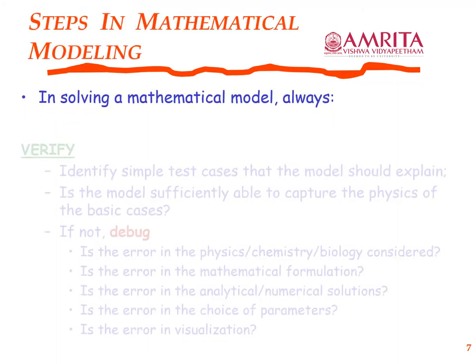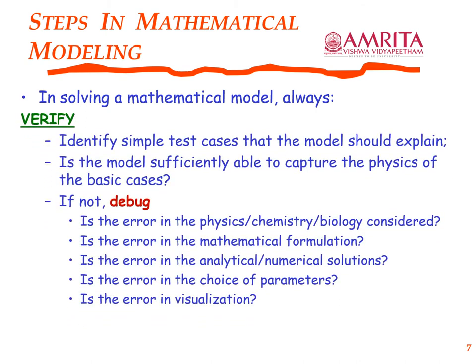When solving a mathematical model, always verify: is the model sufficiently able to capture the physics of simple test cases? For example, with residence time distribution in a CSTR, the simple case is an ideal reactor. If I collapse my RTD to the mean RTD, do I recover the ideal CSTR equations? If not, there is a bug somewhere. It could be in the identified physics, in the mathematical formulation, in the analytical or numerical solution, in the simulation — or it could be something as simple as an error in visualization.